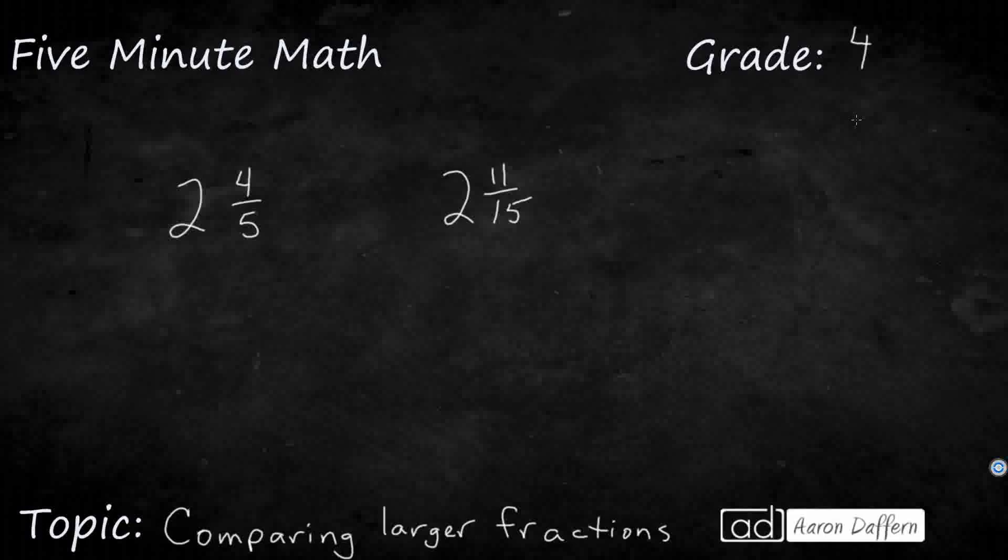So we'll start with a simpler example. Let's say you need to compare 2 and 4 fifths, 2 and 11 fifteenths. Well, the simplest thing is you compare the whole numbers. And if one of these happened to be larger, like let's say this happened to be a 3, then it's pretty simple. You don't even need to look at the fractions. If there's a larger whole number, then that's going to be the larger one. Most of the time, though, it won't be that simple.